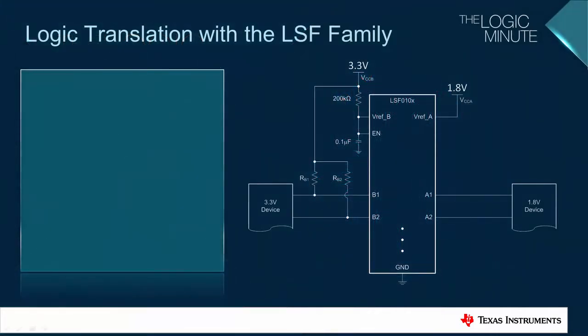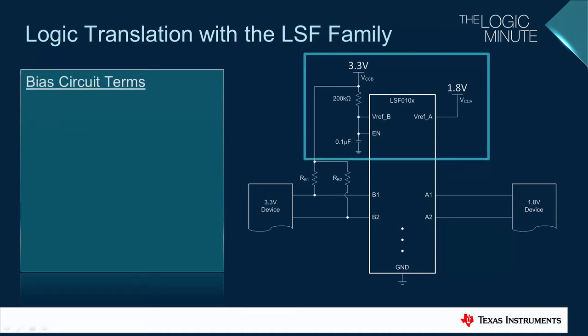Shown on the right is a typical application schematic with an LSF device translating signals between two external devices operating at different voltage nodes. The bias circuit is located at the top of the schematic and contains the following components. The A-side supply, which is commonly referred to as VCCA or the low-side supply, which must be at least 0.8 volts less than VCCB.